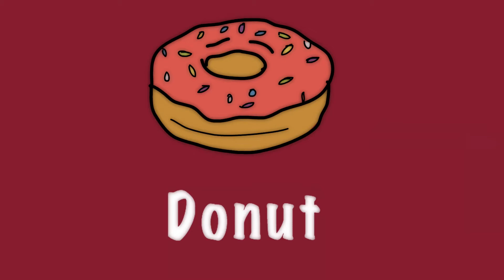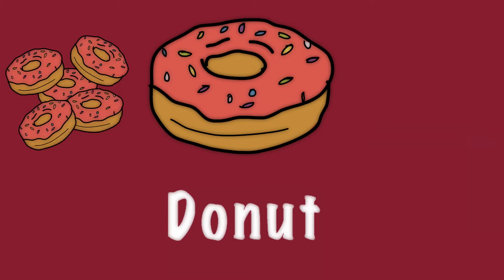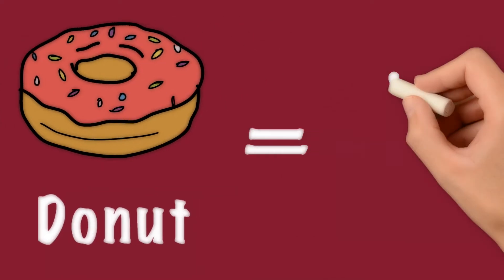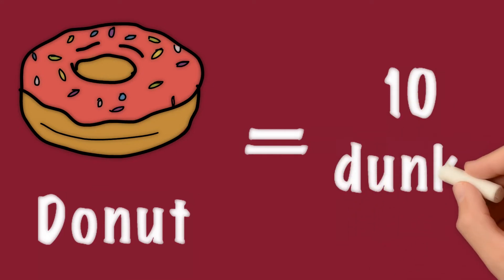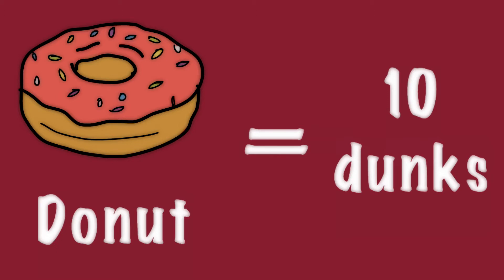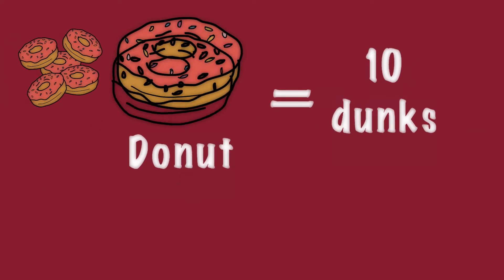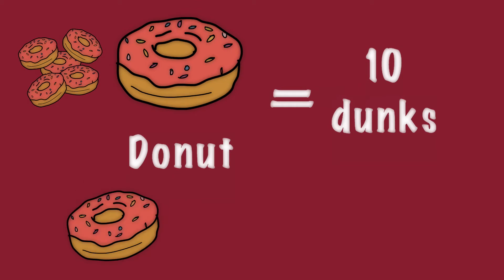The question is, since there is unlimited supply, how many should you eat? Let's say you get 10 dunks of satisfaction from eating your first donut. Dunk is the unit of measurement of satisfaction — I've just made it up. So, how many dunks would you get from your second donut?